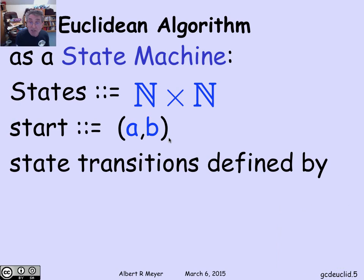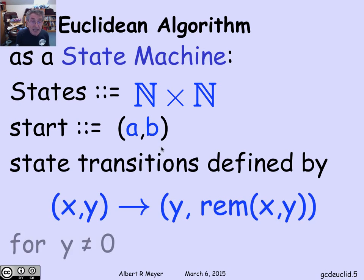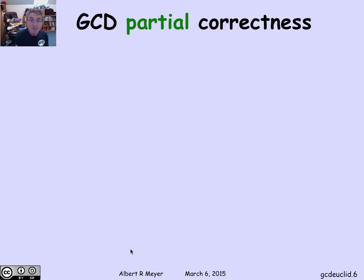The transitions are simply repeatedly applying the remainder lemma. Namely, if I have a main state x, y, where you think of x and y as the GCD that I'm trying to compute, I simply convert x and y to y and the remainder of x divided by y. And I keep doing that as long as y is not 0. Very simple state machine, really just one transition rule.